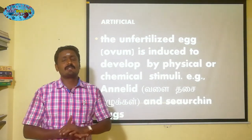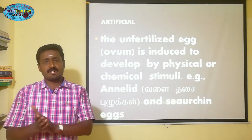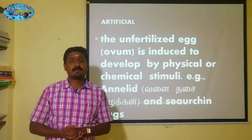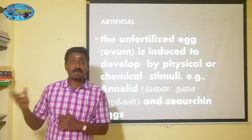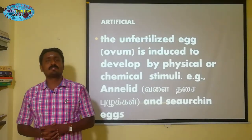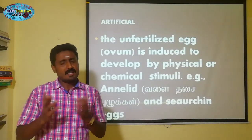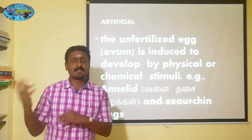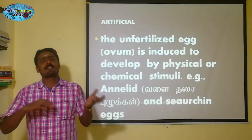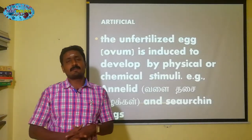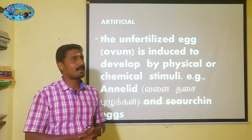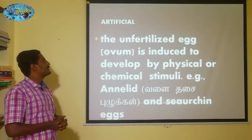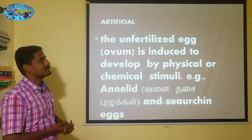When talking about parthenogenesis, the larva is a type of diploid. From the diploid, another diploid organism is formed — this is also called Parthenogenesis. So it may be diploid or haploid, and it occurs due to mitosis division.